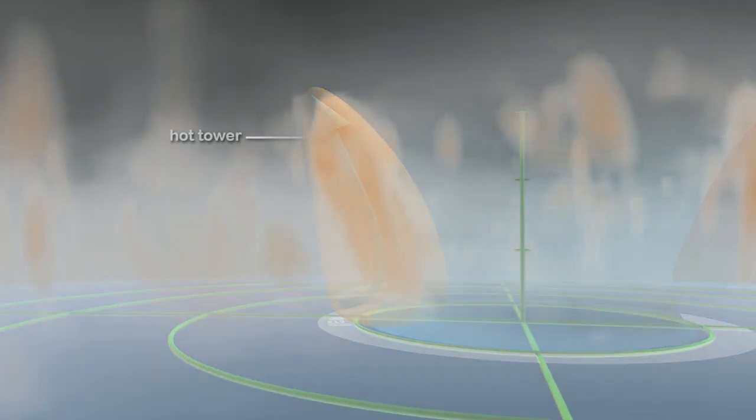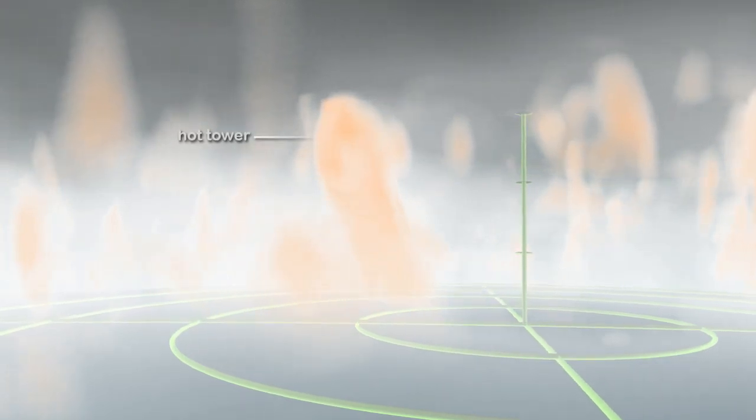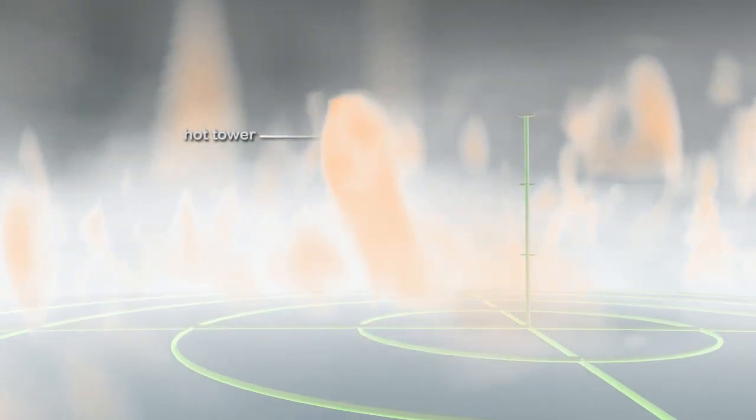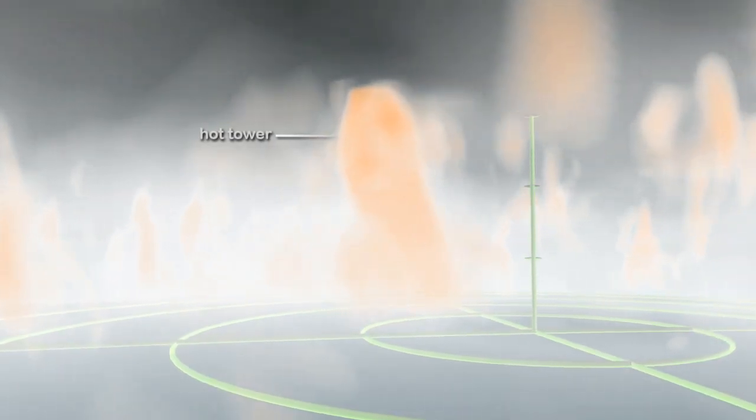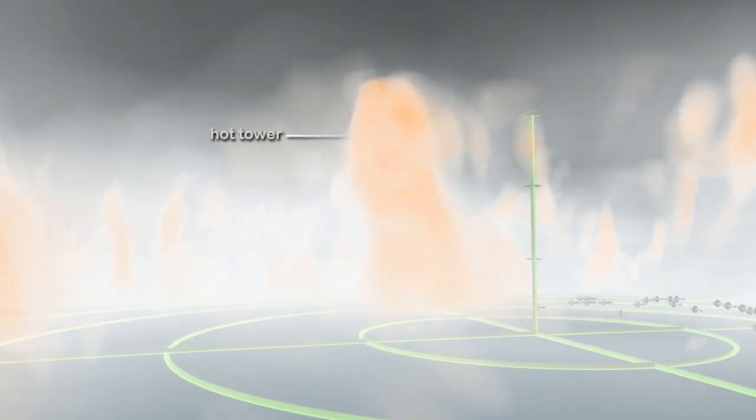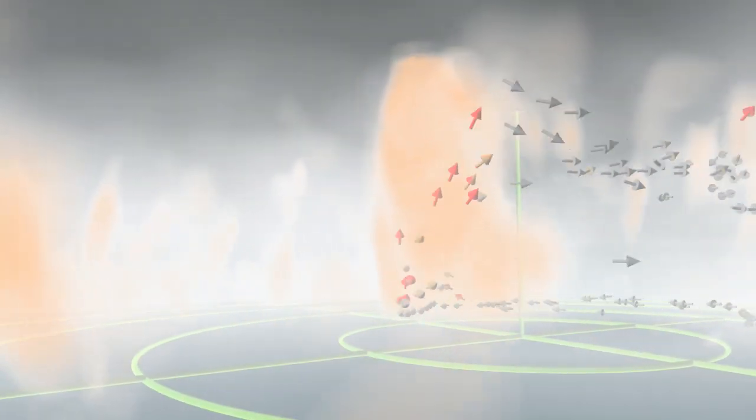High-resolution computer simulations of hurricanes show the formation of hot towers. In this simulation of Hurricane Bonnie, hot towers are clearly visible. The arrows show winds swirling near the surface where energy is picked up from the warm ocean. Some of this air moves into the hot tower and rises rapidly, boosting the hurricane's strength.